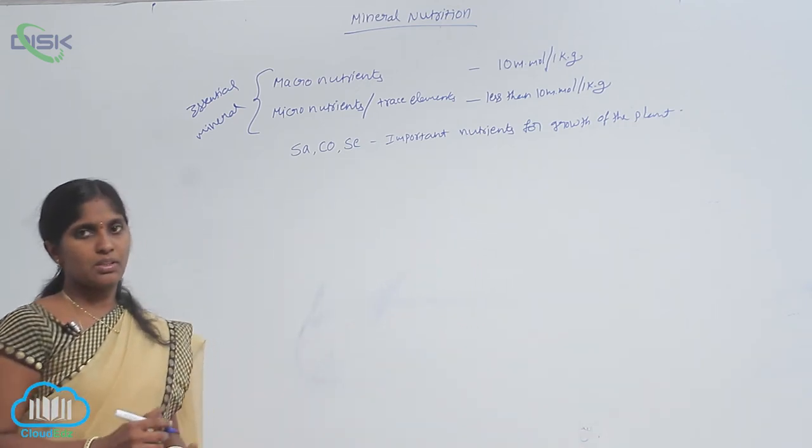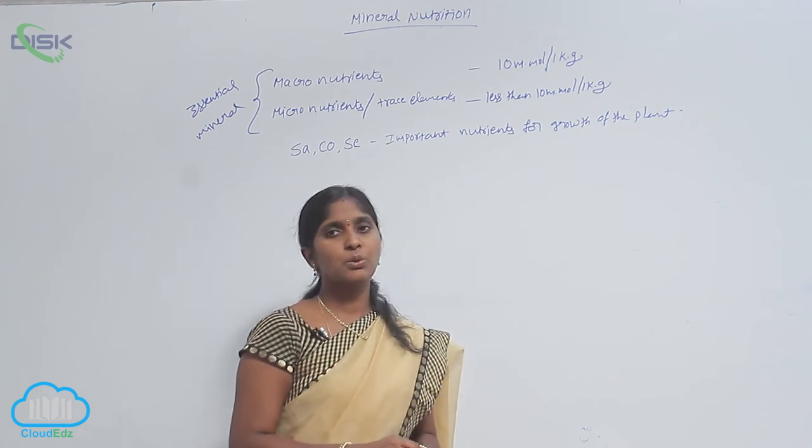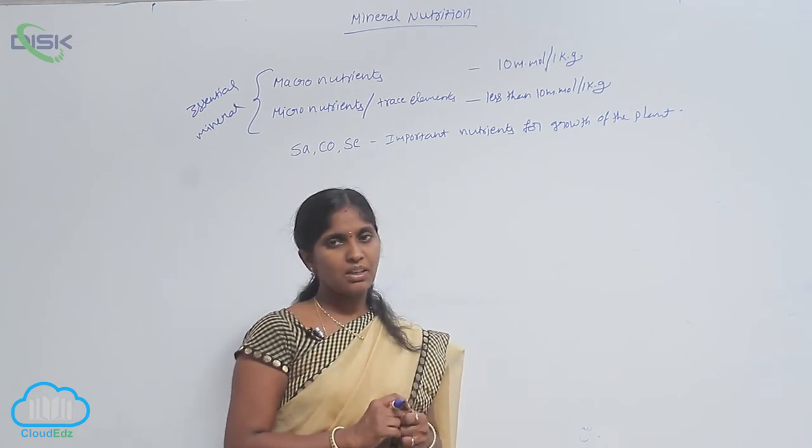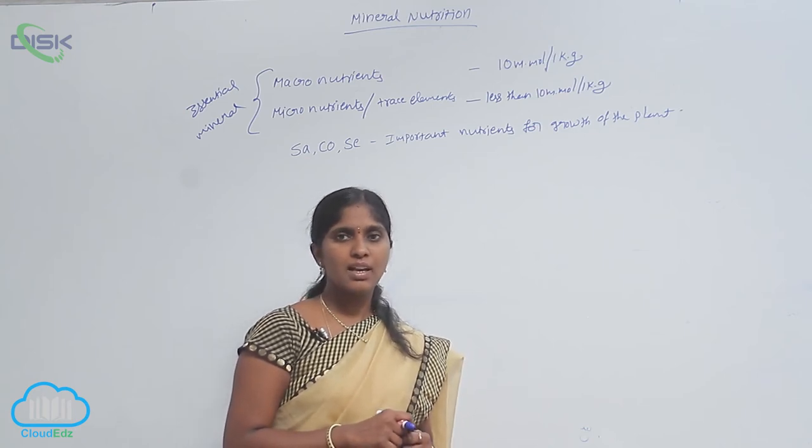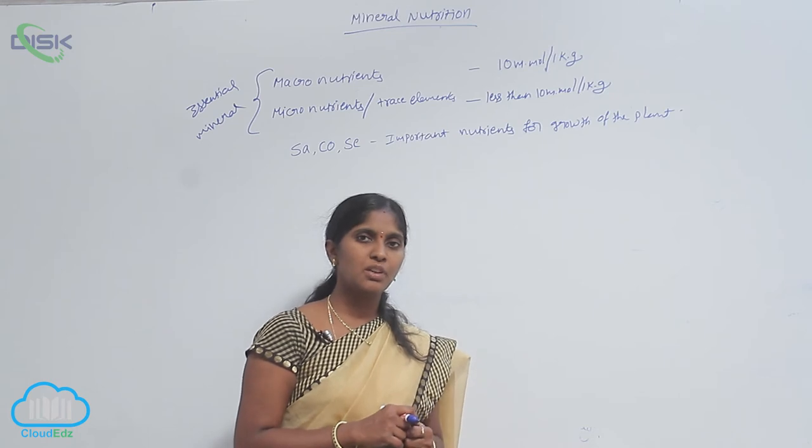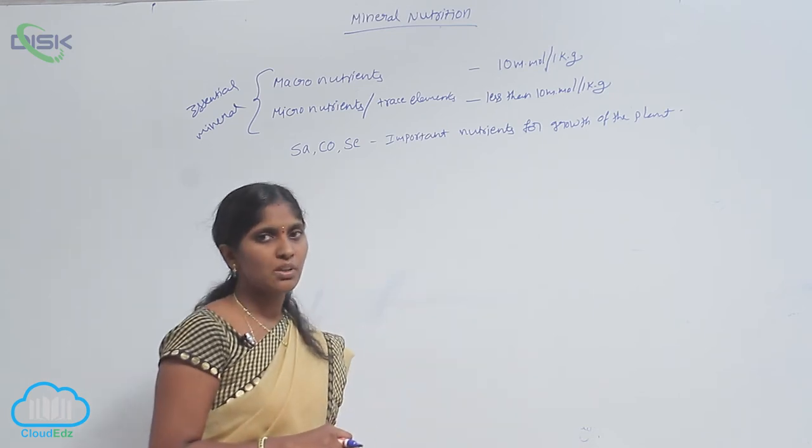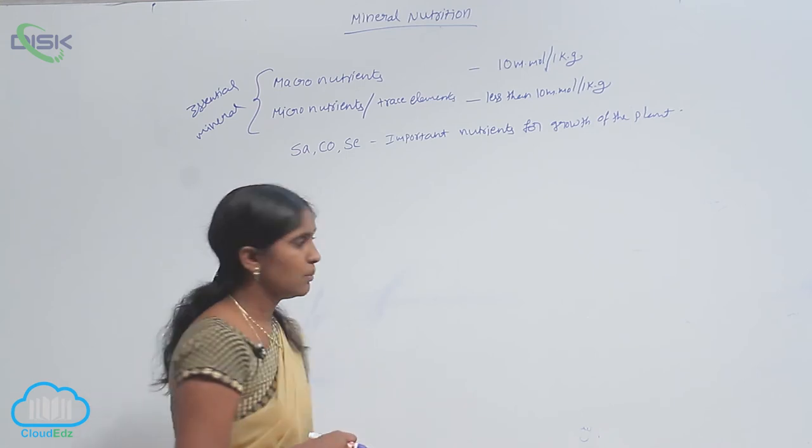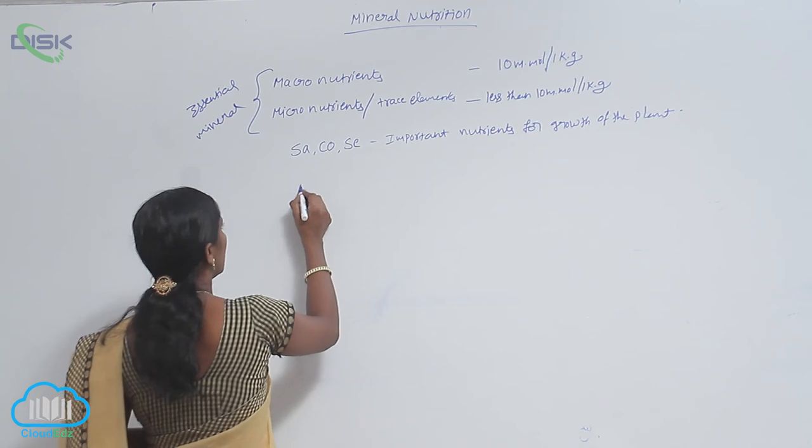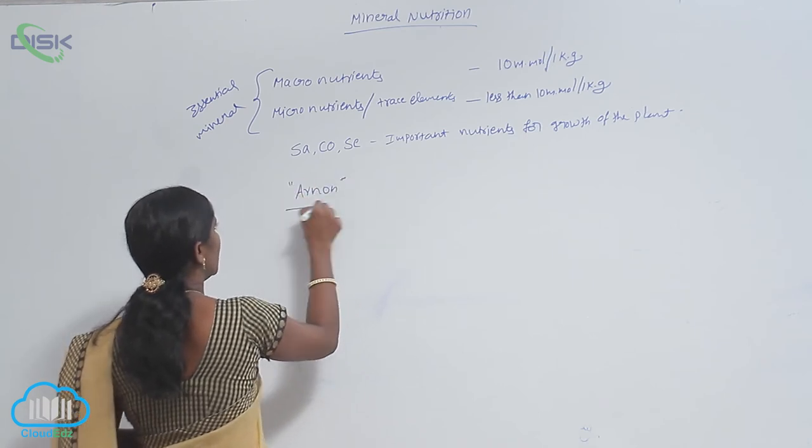How many macronutrients are there? Totally, the essential nutrients are 16, but recently one element was also considered as an essential nutrient, that is nickel. The essential nutrients or essential minerals were given by the scientist Arnon.